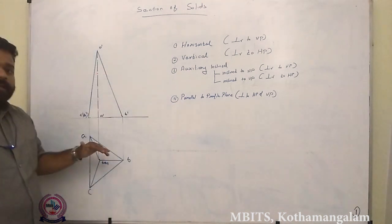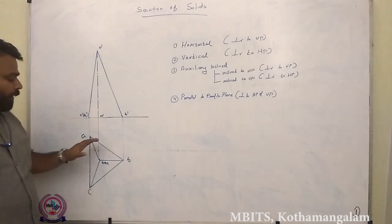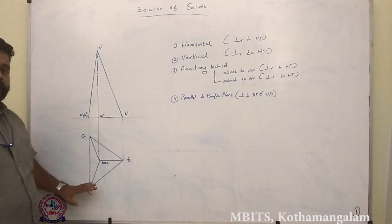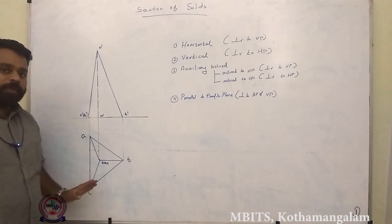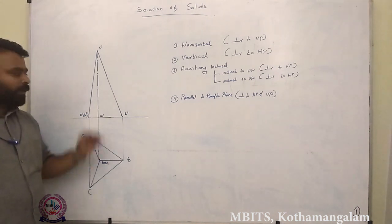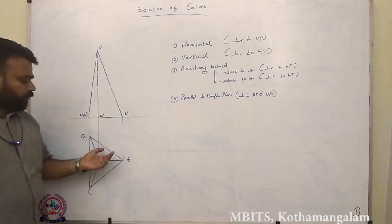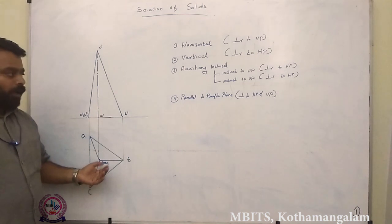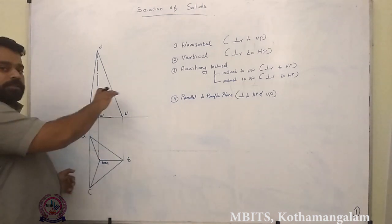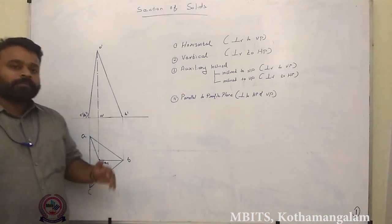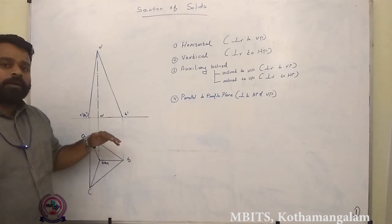In this figure we can see the projection of a triangular pyramid. The triangular pyramid is resting on its base with one base edge perpendicular to VP. We have drawn the simple position and then done the front view from the top view of the base polygon. Now in section of solids we will be cutting the solid by using a section plane, then we remove one portion of the solid and draw our projection.